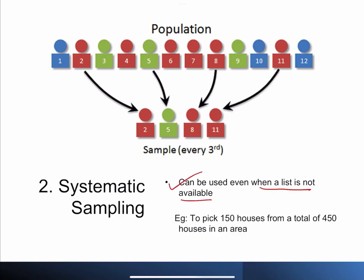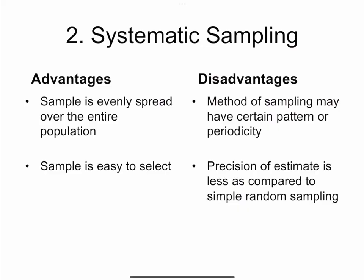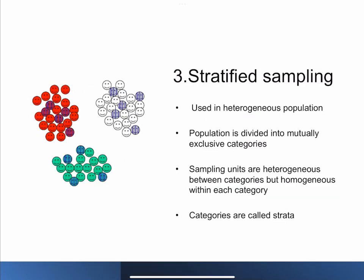Here is an example: to pick 150 houses from a total of 450 houses, the sampling interval becomes three. Between one and three we randomly select a starting unit — say we selected the second participant — and after that every third individual is selected. This follows a systematic pattern, hence it is called systematic random sampling. Advantages: the sample is evenly spread over the entire population and it is easy to select. Disadvantages: it may have a certain periodicity or pattern, and the precision of estimates is less compared to simple random sampling.